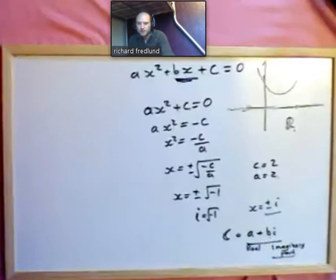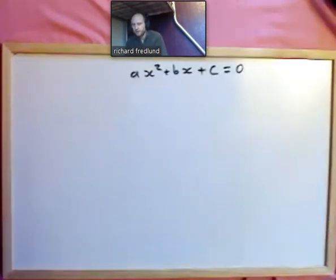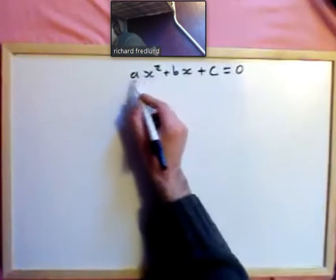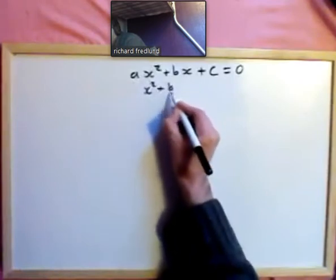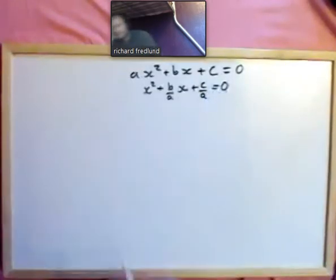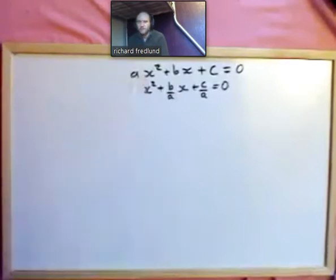Quadratic equations lead to some interesting things in mathematics. To solve the quadratic equation, we start by dividing everything by a, giving x squared plus b-over-a times x plus c-over-a equals 0. This guarantees the coefficient of x squared is 1, and conveniently removes the leading coefficient.